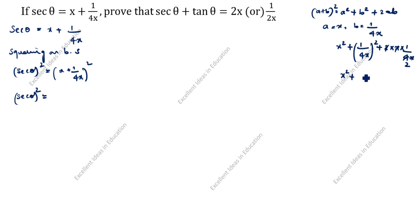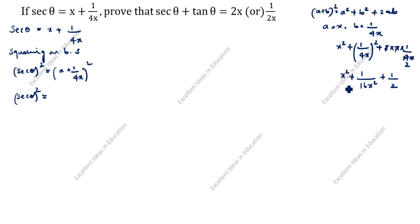So the expansion gives us x square plus 1 by 16x square plus 1 by 2. Therefore, secant squared theta equals x square plus 1 by 16x square plus 1 by 2.